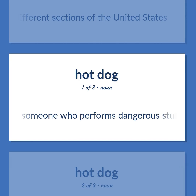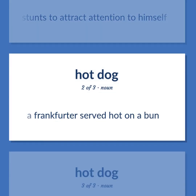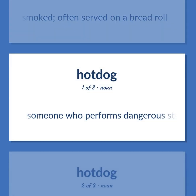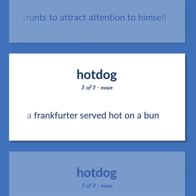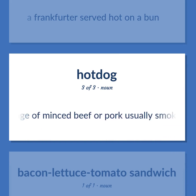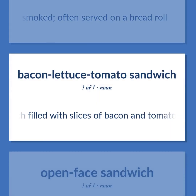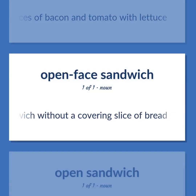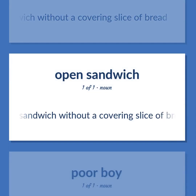Daredevil: someone who performs dangerous stunts to attract attention to himself. Hot dog: a Frankfurter served hot on a bun. Also: a smooth textured sausage of minced beef or pork, usually smoked, often served on a bread roll. BLT: sandwich filled with slices of bacon and tomato with lettuce. Open-face sandwich: a sandwich without a covering slice of bread.